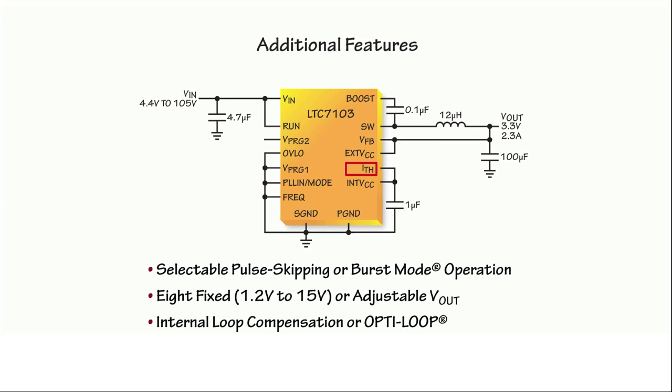In this mode, the compensation of the voltage loop is automatically adjusted based on switching frequency to ensure both speed and stability. Alternatively, the voltage loop can be optimized externally using opti-loop compensation.